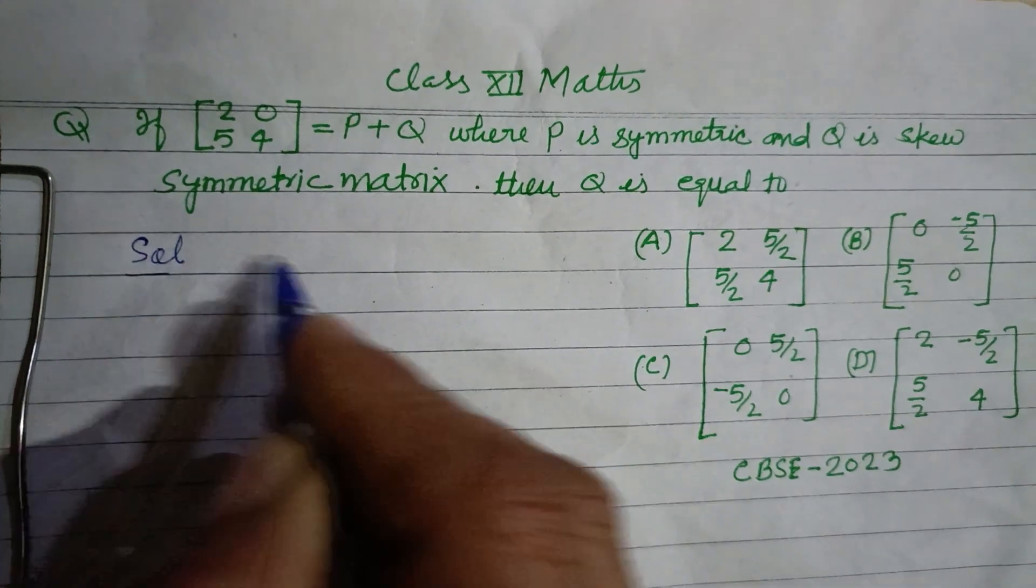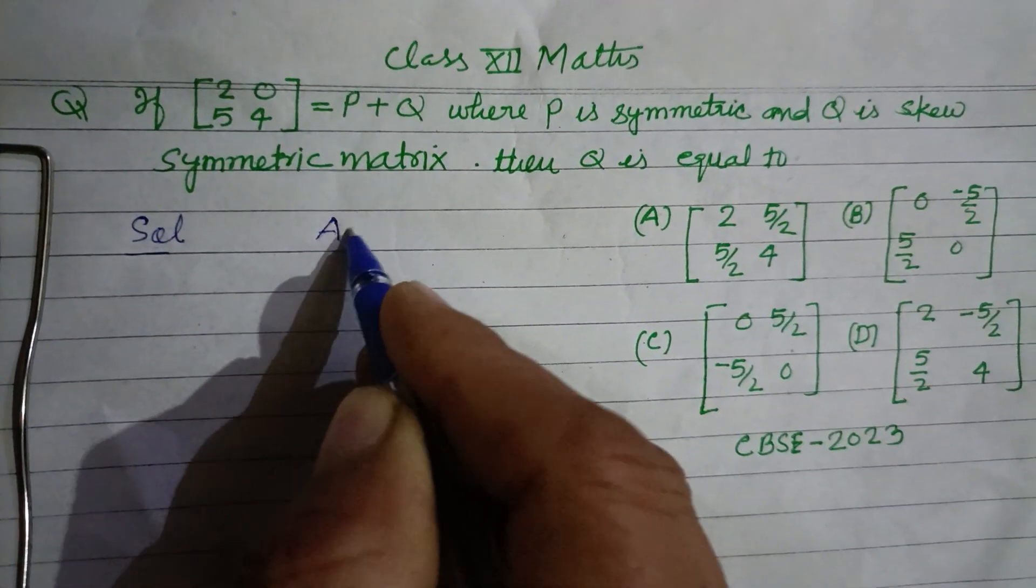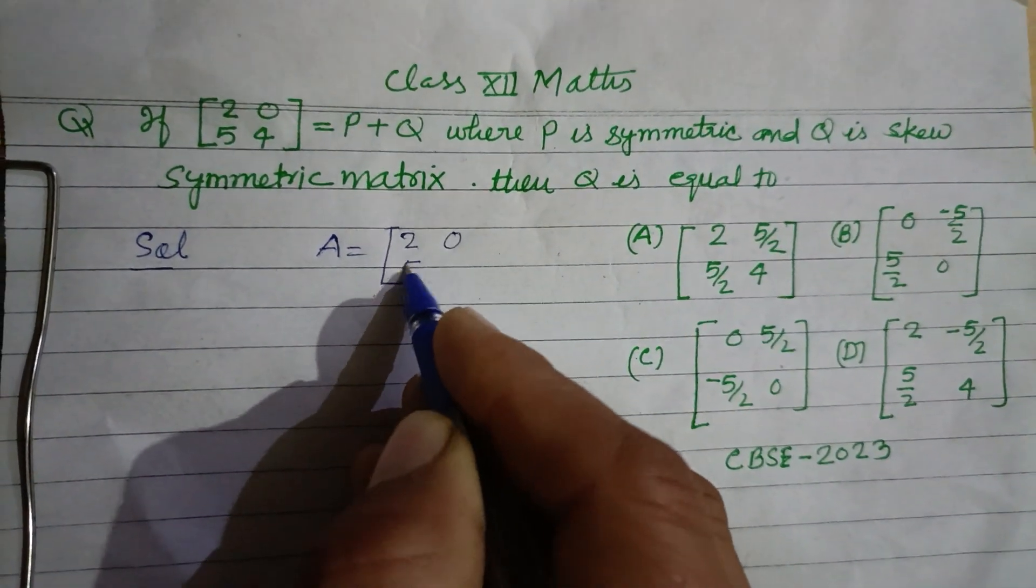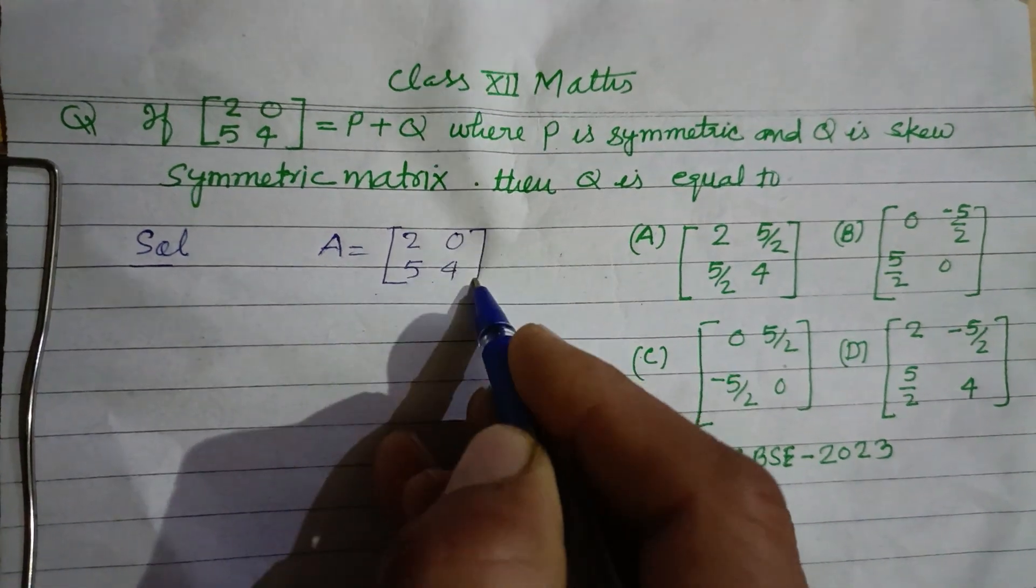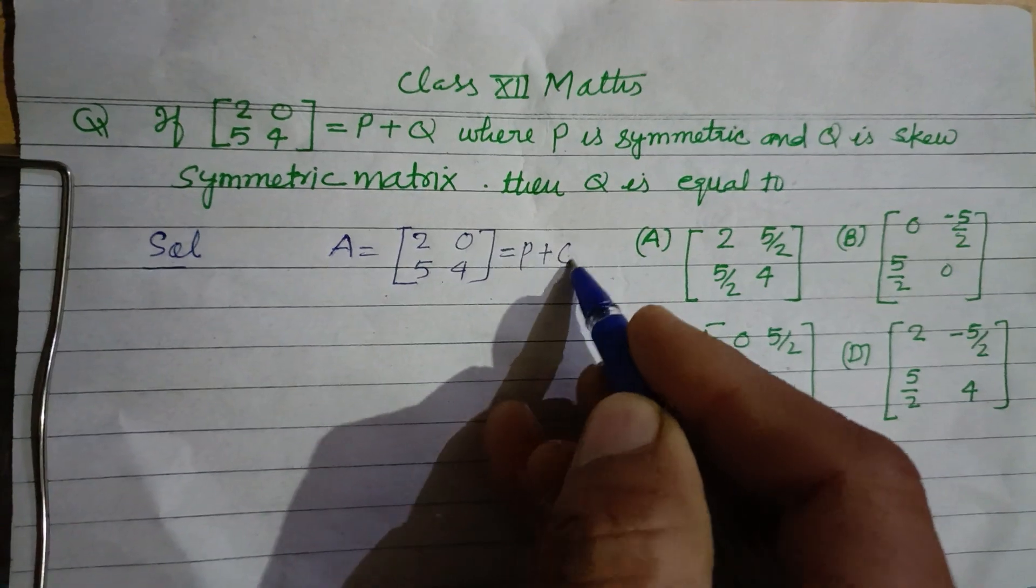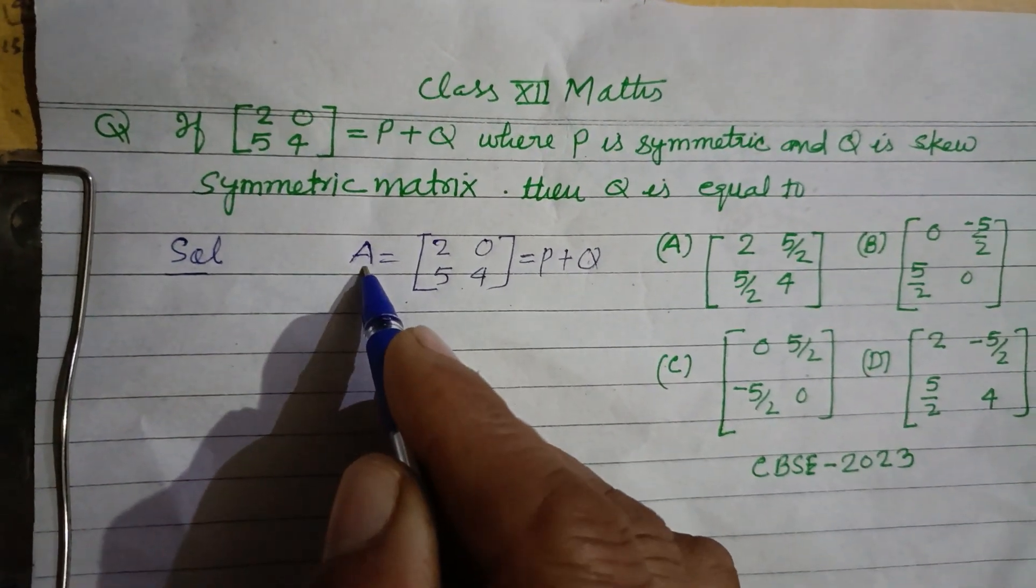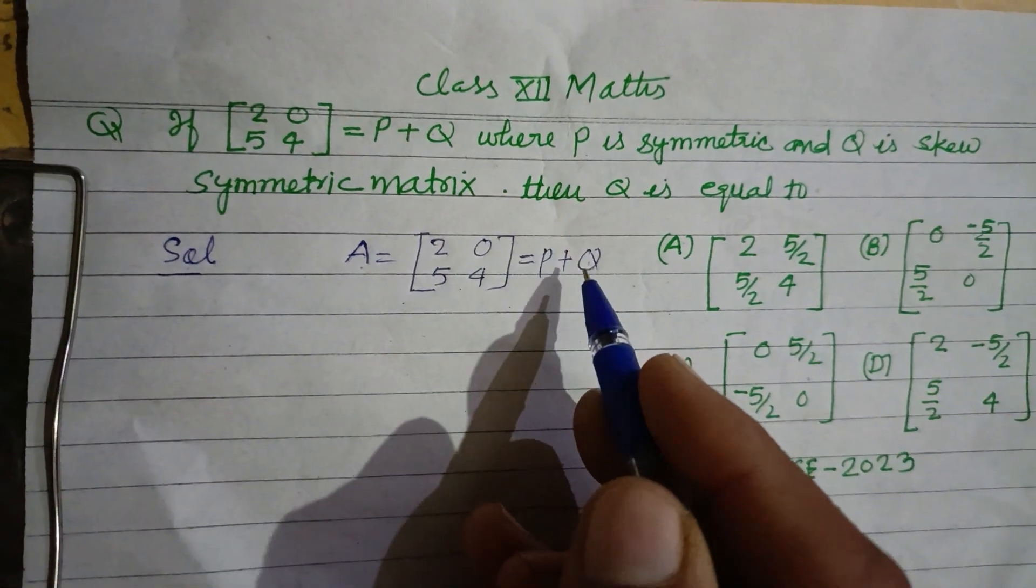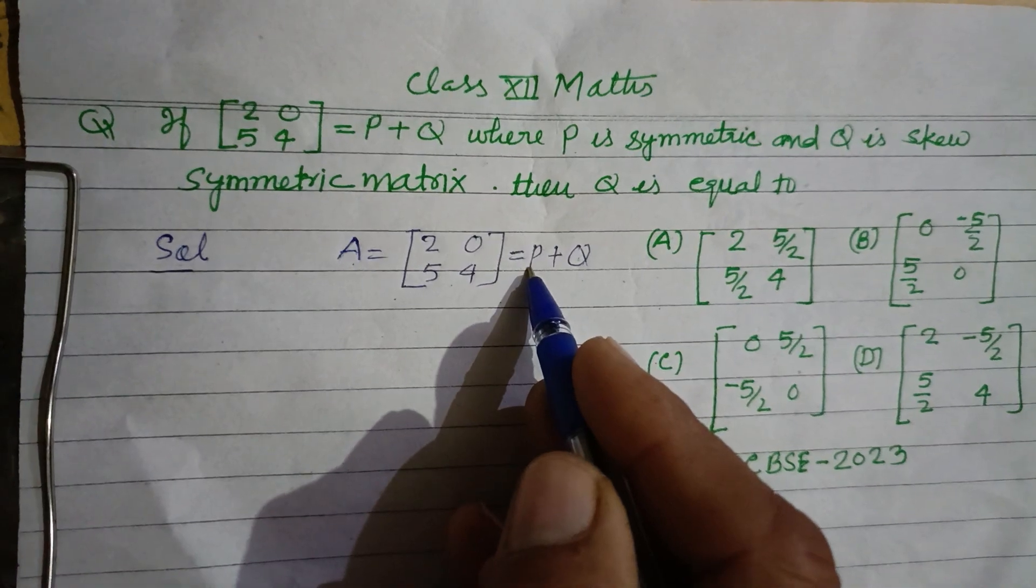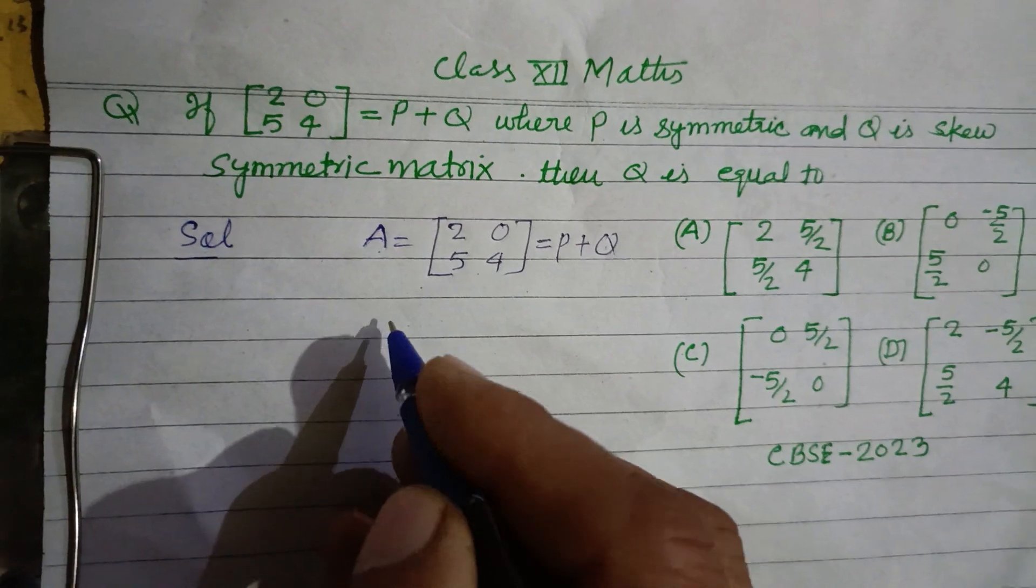So students, the given matrix A is [2 0; 5 4]. This is the sum of two matrices P and Q. We know that any matrix can be written as the sum of a symmetric matrix and a skew symmetric matrix.